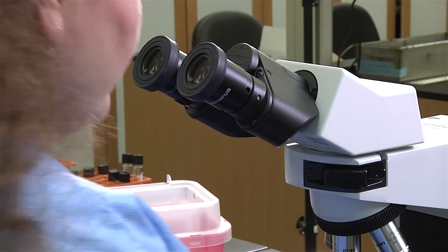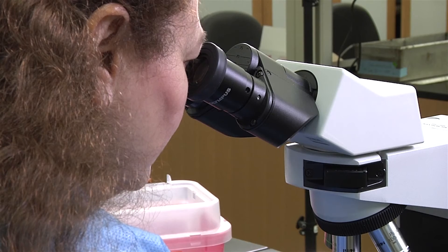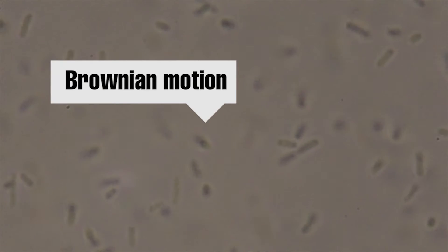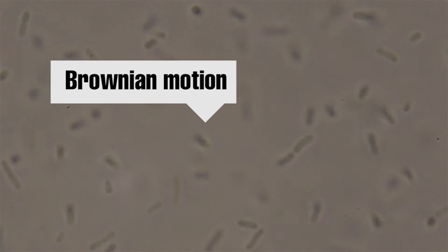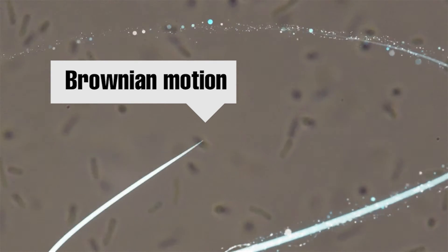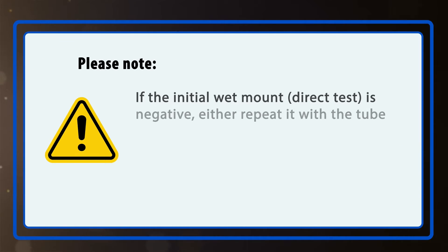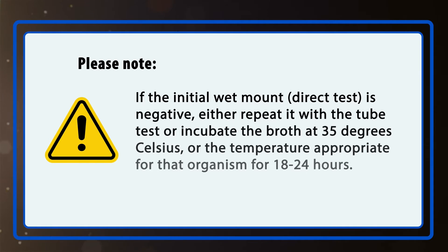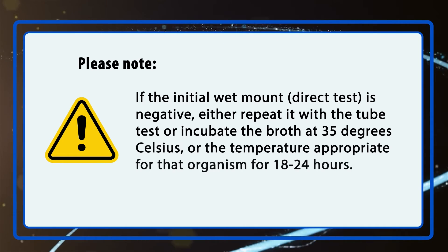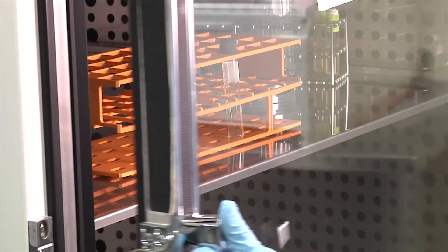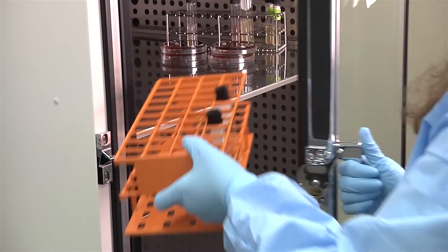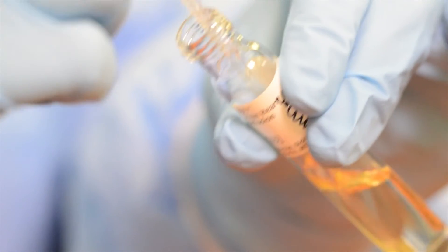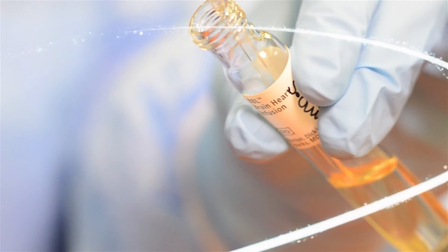Observe the sample under high power 40X on a microscope. Directional motility is recorded as a positive test, indicating a motile organism. If the organisms do not change position with respect to one another, that is Brownian motion — a negative test for a non-motile organism. If the initial wet mount direct test is negative, either repeat it with a tube test or incubate the broth at 35 degrees Celsius, or the temperature appropriate for that organism, for 18 to 24 hours. After 18 to 24 hours, remove the broth from the incubator, place it on your bench, and mix gently but do not invert the tube. Non-motile or aerotolerant organisms may have settled to the bottom. Repeat the steps above for observing motility.